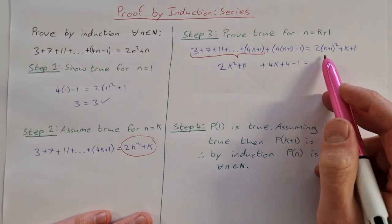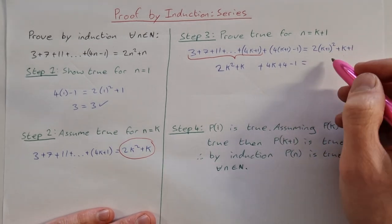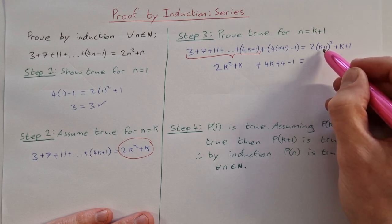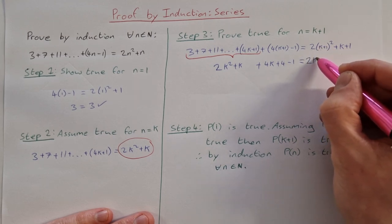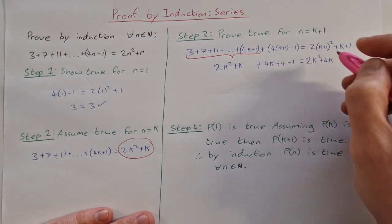On this right hand side then, I'm going to multiply out these brackets and see what I get. So squaring k plus 1 would be k squared plus 2k plus 1. Multiplying by 2 then would be 2k squared plus 4k plus 2.